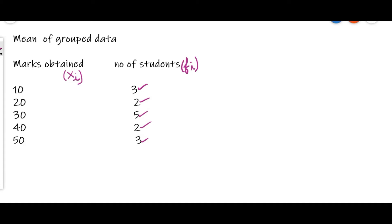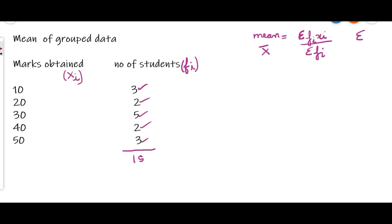Now how will you find the arithmetic mean for this grouped data, where scores and frequencies are both given? The mean formula is x-bar equals sigma fi·xi divided by sigma fi — this sigma symbol means summation. Sigma fi means the total of the frequencies, and when you add them you will get 15. Now we have to find out sigma fi·xi.